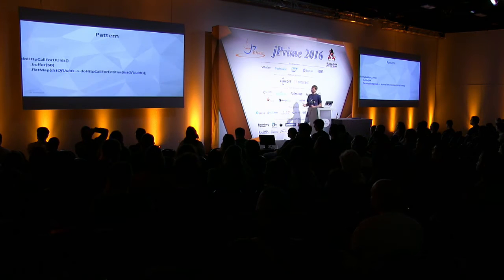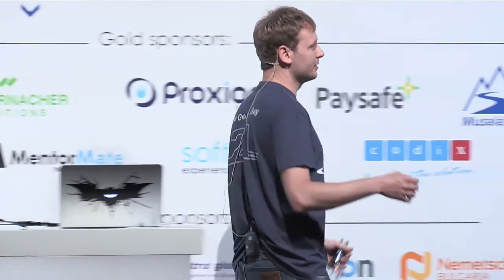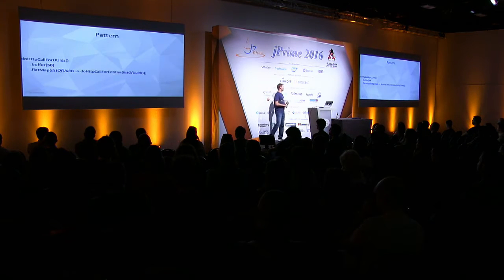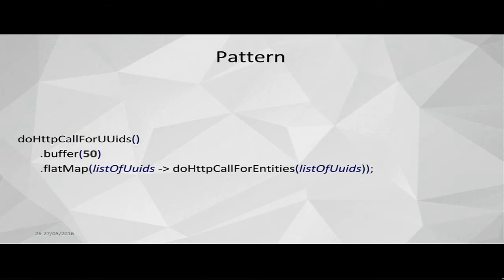Let's start with something very simple. When you have a bunch of UUIDs and you want to improve performance of your service, whenever you are calling another service you probably don't want to call one by one in terms of IDs. You want to create a bunch of them and push in a single call or in two or three calls, depending on how big your list of UUIDs is. There is a really nice operator called buffer — here you are just buffering all the UUIDs you are getting into lists of 50, and then you can push it to some service to actually handle it.